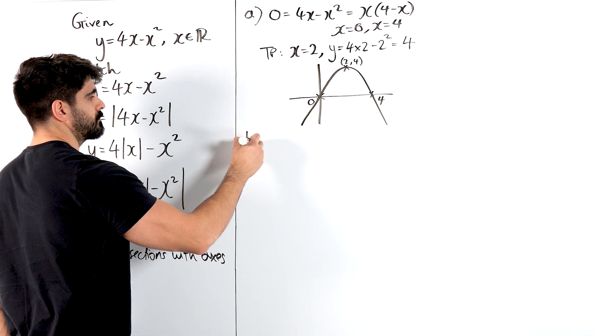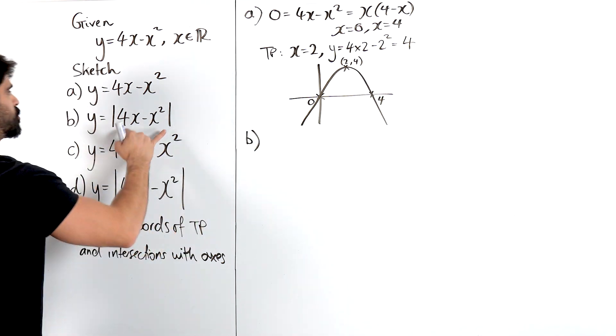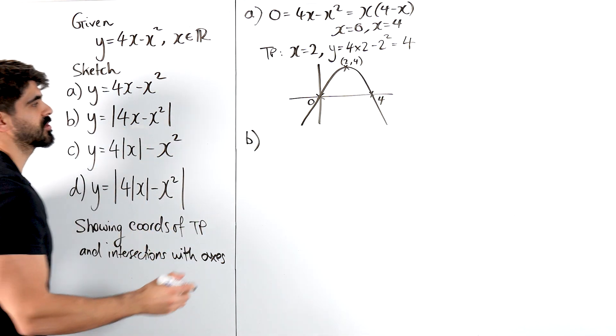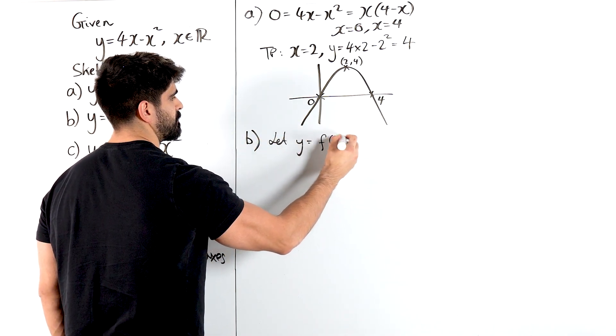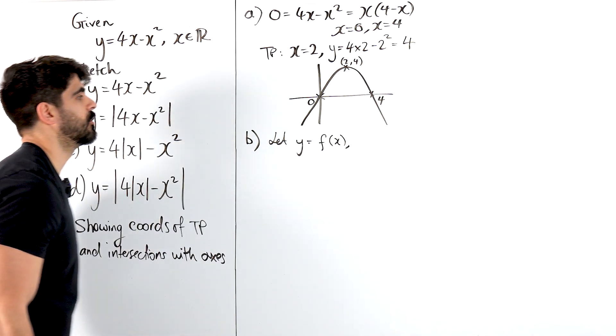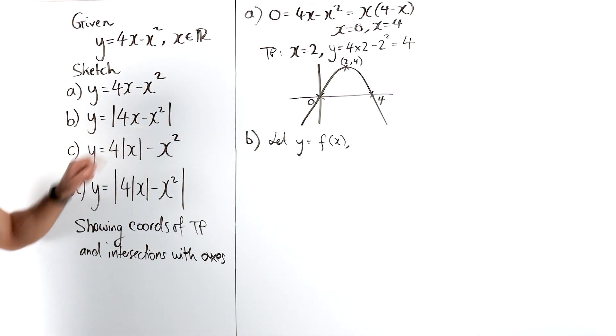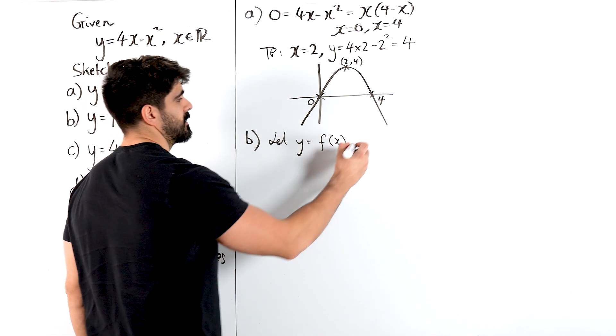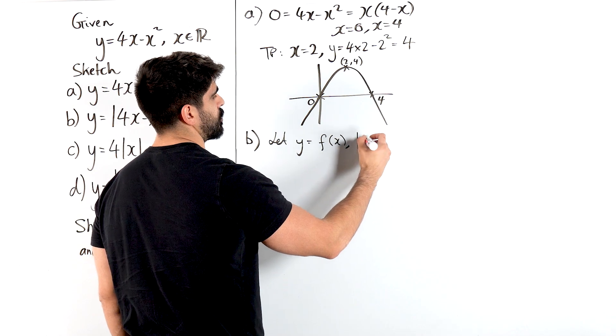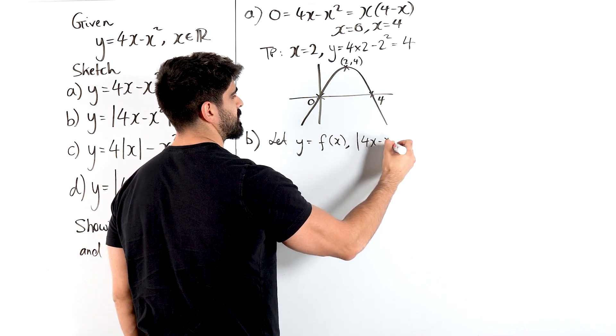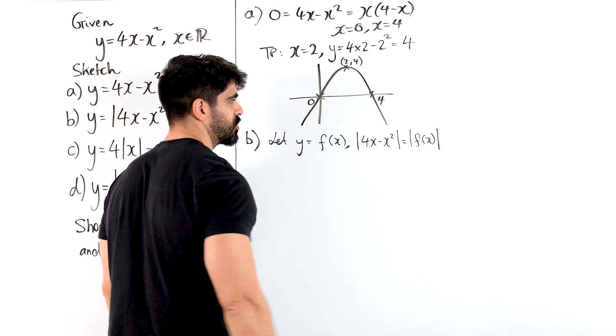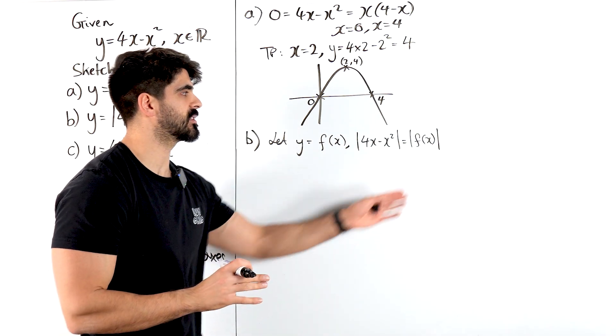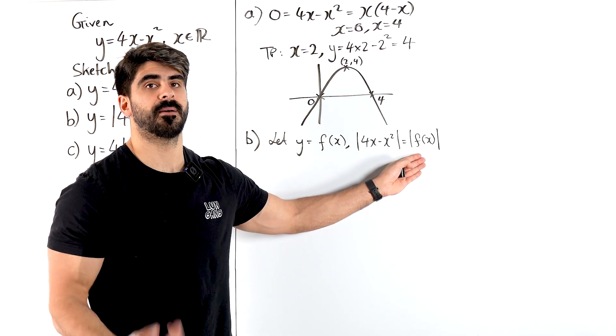So part b, they have a modulus around the whole thing. So just to help us understand, I'm going to let y equal f of x. Now you can see here they want us to sketch, so this modulus will be modulus f of x. So the modulus of 4x minus x squared is the modulus of f of x. So what transformation is that? This transformation where the modulus is around the whole thing is it's saying anything that's negative, make it positive.